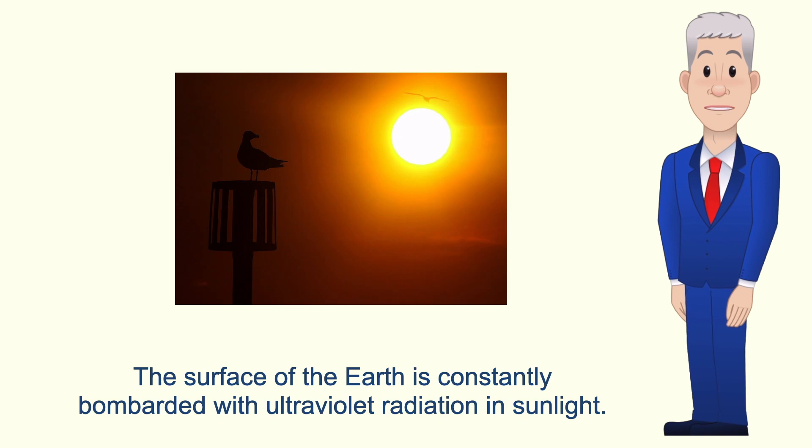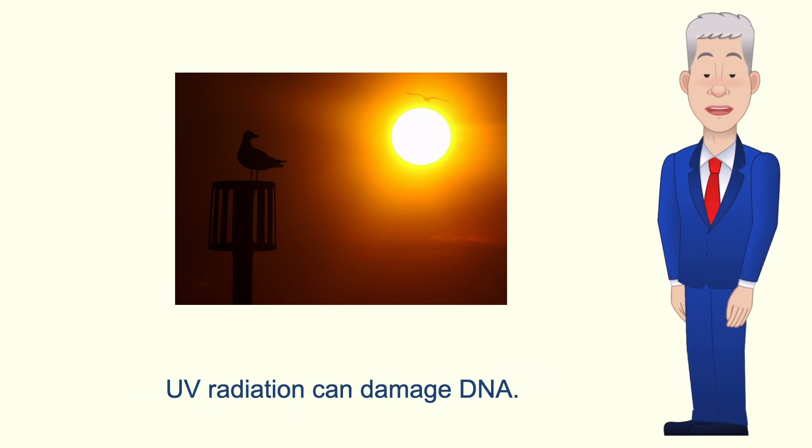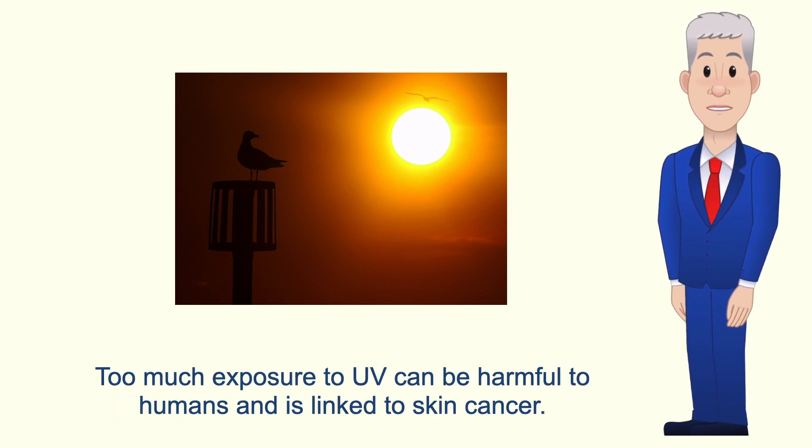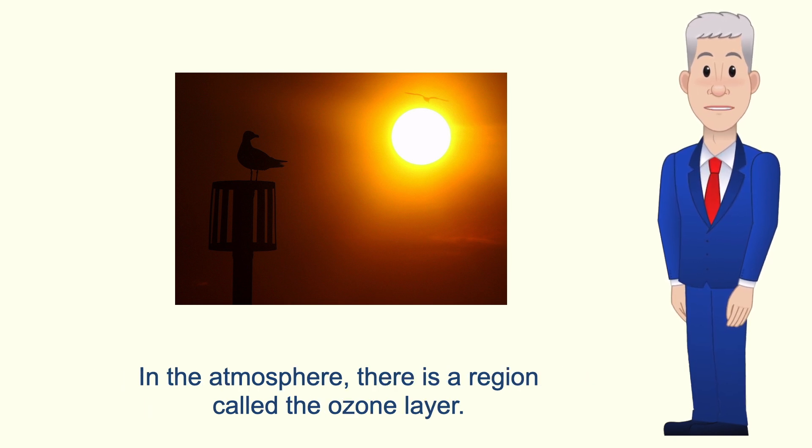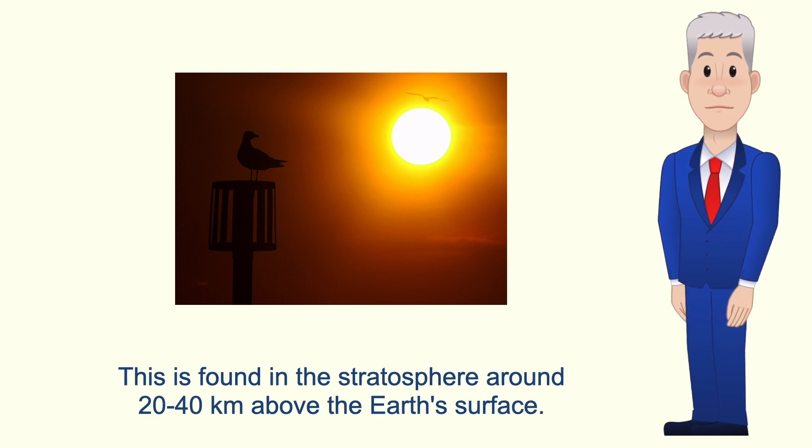The surface of the earth is constantly bombarded with ultraviolet radiation in sunlight. UV radiation can damage DNA, so too much exposure to UV can be harmful to humans and is linked to skin cancer. In the atmosphere there's a region called the ozone layer. This is found in the stratosphere around 20 to 40 kilometers above the earth's surface.